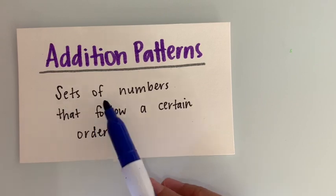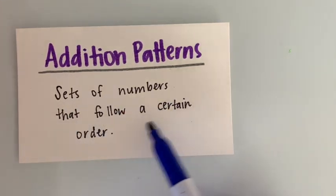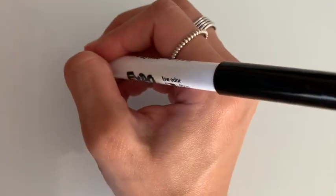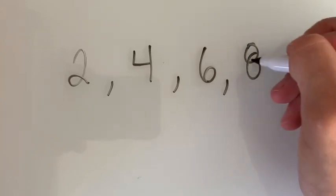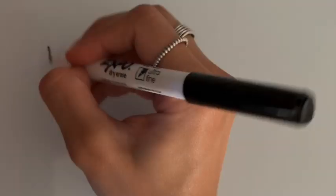Today we're looking at addition patterns. Addition patterns are sets of numbers that follow a certain order. For example, two, four, six, and eight, and so on. It goes by two, so that's our pattern.